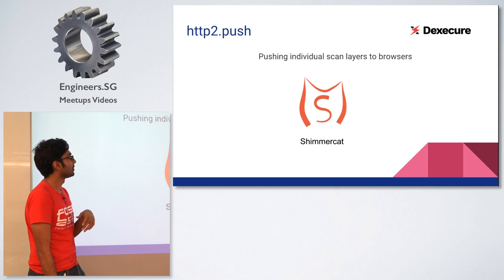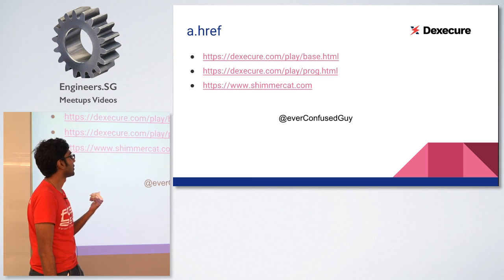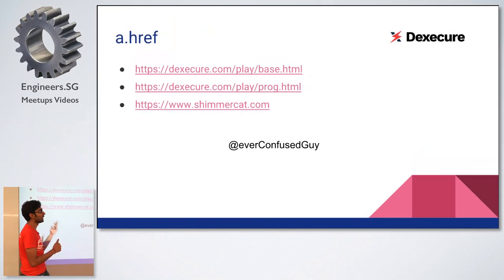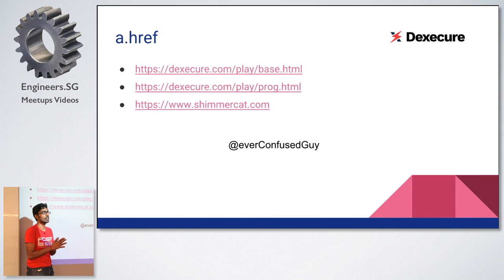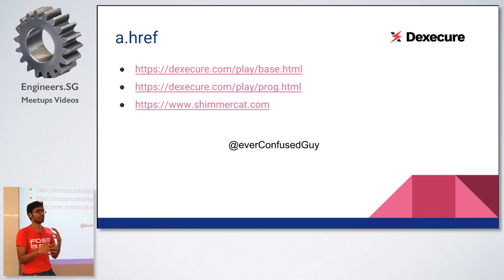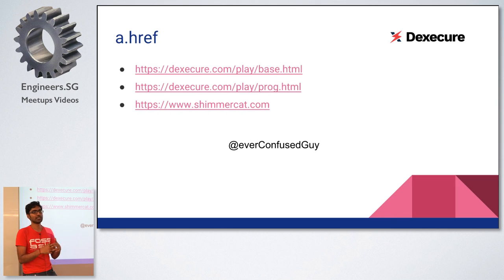You can play around with these two demo pages and see the difference in experience between a normally encoded image and a progressive image. Run tests in different browsers and see how it works.